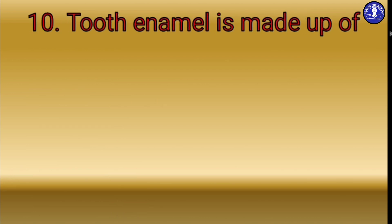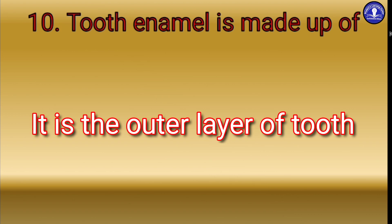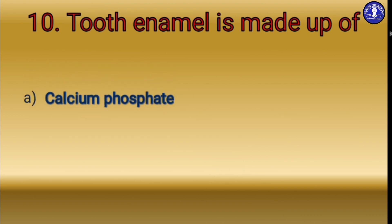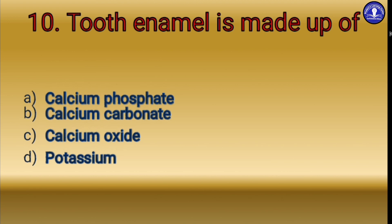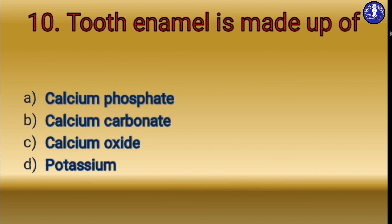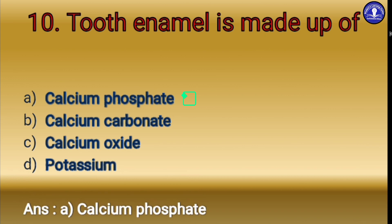Let's move to the last question. Tooth enamel is made up of — it is the outer layer of our tooth. Option A calcium phosphate, option B calcium carbonate, option C calcium oxide, option D potassium. The correct option is option A: calcium phosphate.